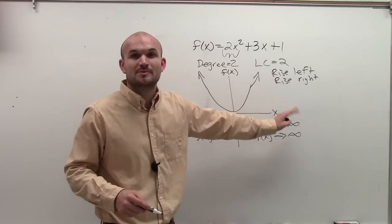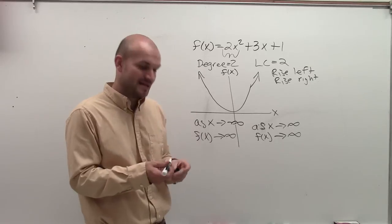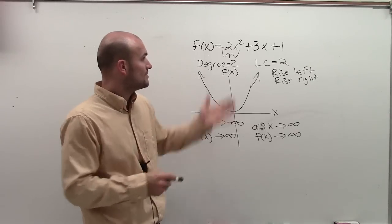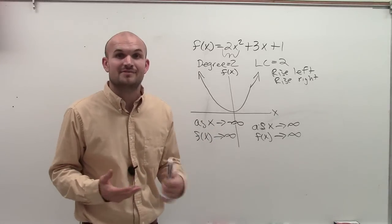Because remember, to the right is going to be infinity, up is going to be infinity, down below is negative infinity, and to the left would be negative infinity. So there you go, ladies and gentlemen. That's a quick, easy way to evaluate using the leading coefficient test for end behavior. Thanks.